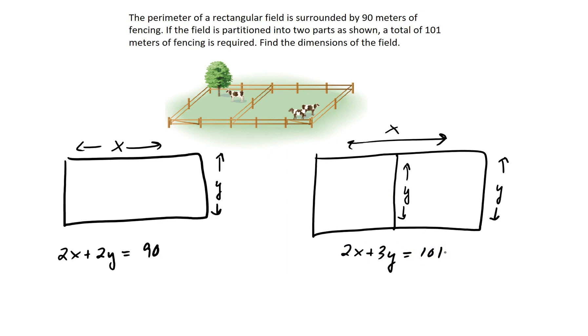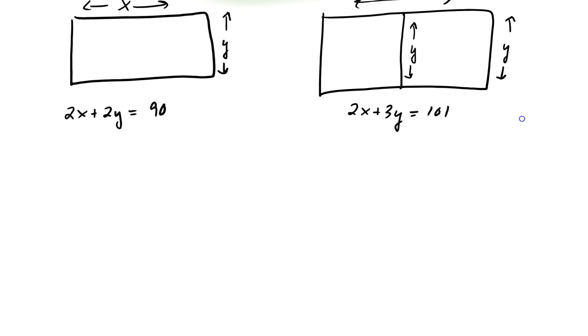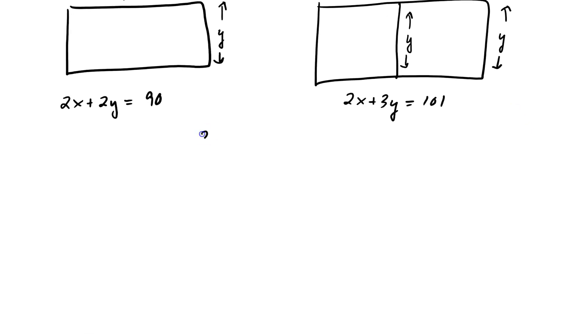So this is the system that you, taking these two equations together, that's the system you've got to solve for x and y. So let's do it. We've got 2x plus 2y equals 90, and then also 2x plus 3y equals 101.